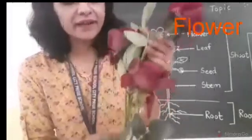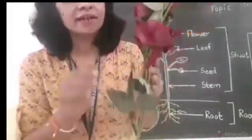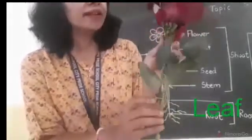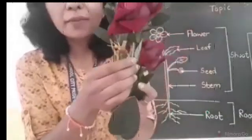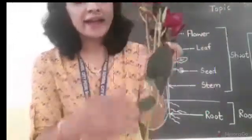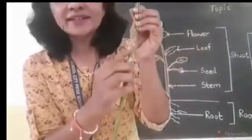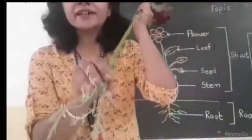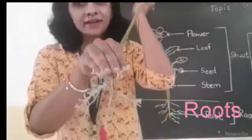You can see the flower. Then here it is leaf. Then can you see the small bud? It is a bud. And it is stem. And here it is having roots.